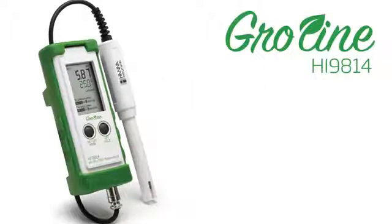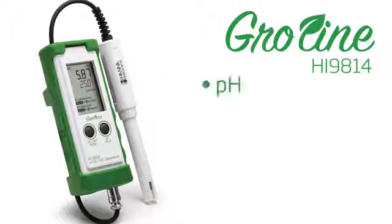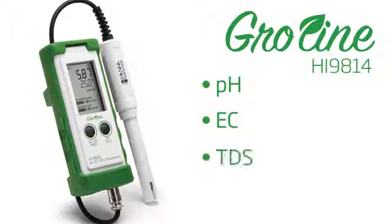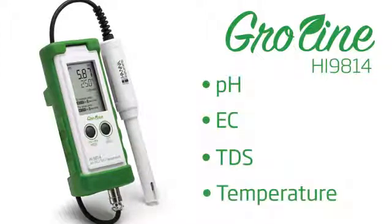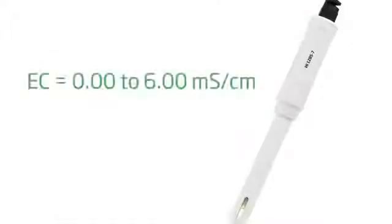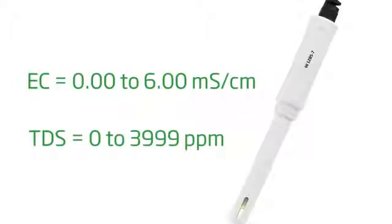The HI9814 Growline Waterproof Meter measures pH, conductivity, total dissolved solids, and temperature with a single amplified probe that is immune to interference from humidity and electrical noise.